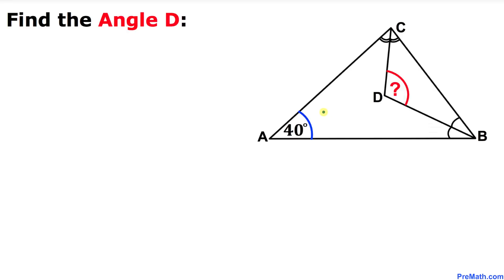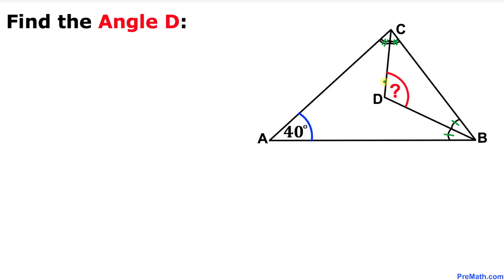Welcome to pre-math. In this video tutorial we have triangle ABC such that angle A is 40 degrees. We also have triangle BDC where angle B is divided into two equal parts and likewise angle C has been divided into two equal parts as well. We are going to calculate the value of angle D.